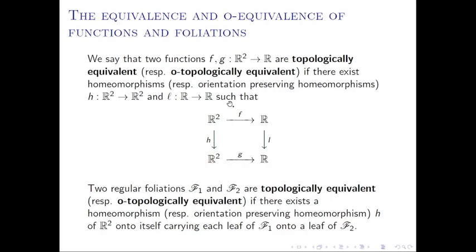We say that two functions f and g from R² to R are topologically equivalent if there exist homeomorphisms h from R² to R² and l from R to R such that this diagram is commutative. Two regular foliations f1 and f2 are topologically equivalent if there is a homeomorphism h of R² onto itself carrying each leaf of f1 onto a leaf of f2. In the case when h and l are orientation-preserving homeomorphisms, then we say that the functions f and g, and respectively the foliations f1 and f2, are orientedly topologically equivalent.